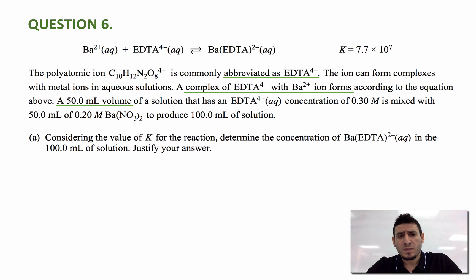A 50.0 milliliter volume of a solution that has an EDTA 4- concentration of 0.30 molar is mixed with 50.0 milliliter of 0.20 molar barium nitrate solution to produce 100 milliliter of solution. The first question is, considering the value of K for the reaction, determine the concentration of the complex ion Ba(EDTA) 2- in the 100 milliliter of solution. Justify your answer.